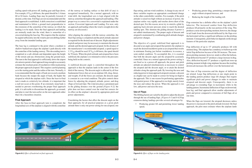The airplane must be angled sufficiently into the wind to prevent drifting farther away from the intended landing spot. The base leg is continued to the point where a medium to shallow bank turn aligns the airplane's path directly with the centerline of the landing runway. This descending turn is completed at a safe altitude. The turn to the final approach is sufficiently above the airport elevation to permit a final approach long enough to accurately estimate the resultant point of touchdown while maintaining the proper approach airspeed. It is recommended that the angle of bank not exceed a medium bank, because the steeper the angle of bank, the higher the airspeed at which the airplane stalls.